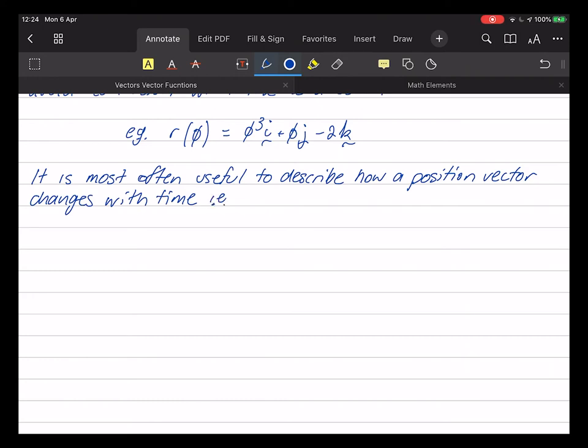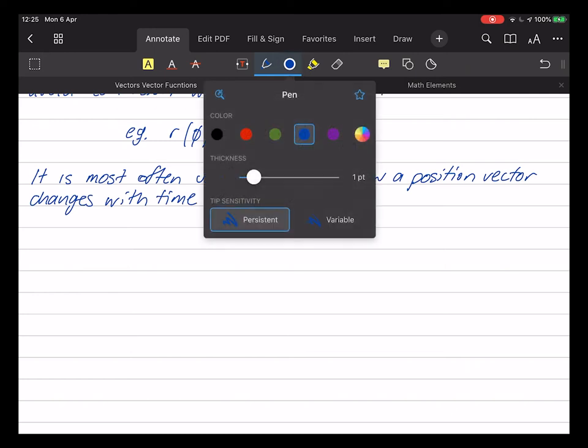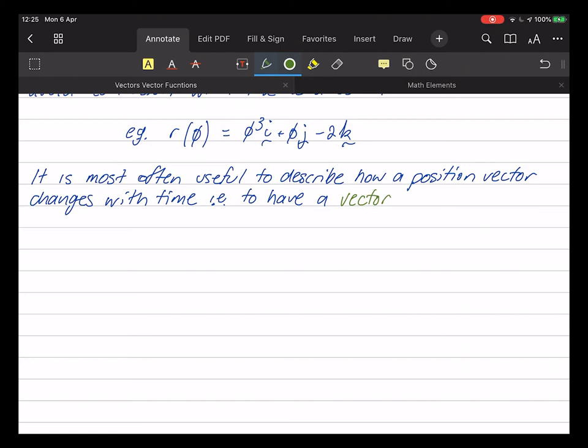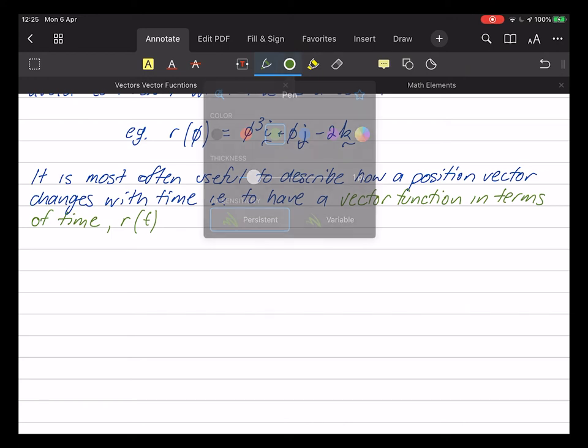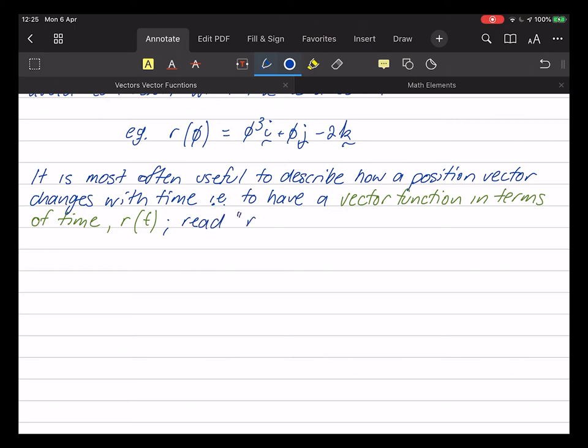That is to say, to have a vector function. It's the main term of this lesson. This vector function doesn't appear in the syllabus. Yeah, great. So, vector function in terms of time. And that would be r of t. All right. And just to drill the point home, read r of t.